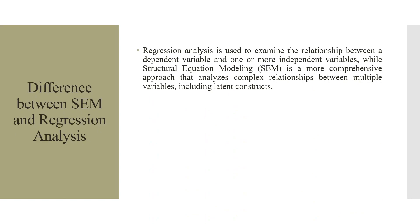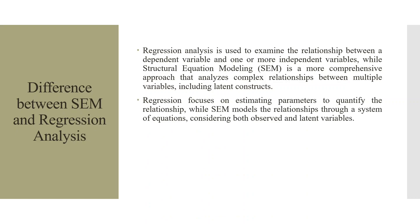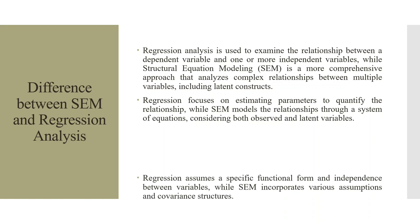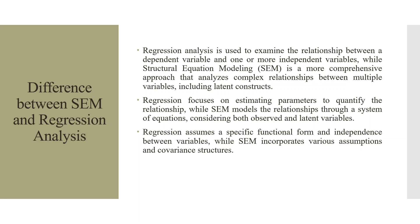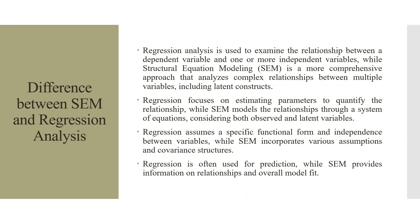The difference between SEM and regression analysis is that regression analysis is used to examine the relationship between a dependent variable and one or more independent variables, while structural modeling is a more comprehensive approach that analyzes complex relationships between multiple variables including latent constructs. Regression focuses on estimating parameters to quantify relationships, while SEM models the relationship through a system of equations considering both observed and latent variables. Regression assumes a specific functional form and independence between variables, while SEM incorporates various assumptions and covariance structures. Regression is often used for prediction, while SEM provides information on relationships and overall model fit.